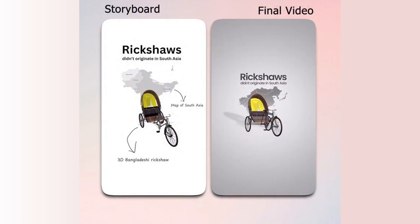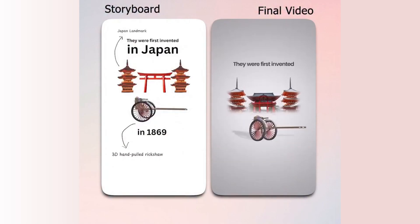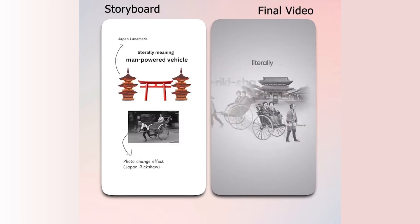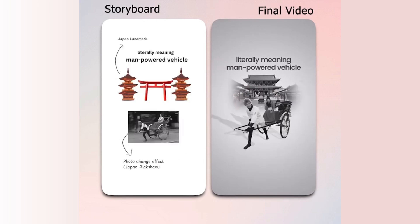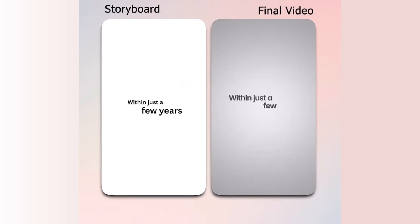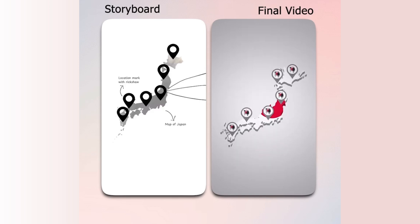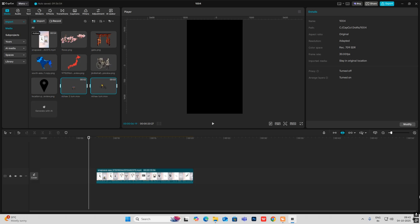Rickshaws didn't originate in South Asia — they were first invented in Japan in 1869, called Jinrikisha, literally meaning man-powered vehicle. Within just a few years, tens of thousands were on the streets of Japan. Hi everyone, today we are going to make a 3D reel, and today's focus will be mainly on the design of this video.